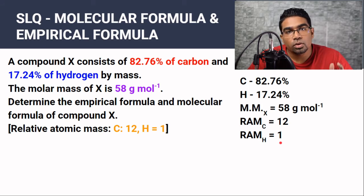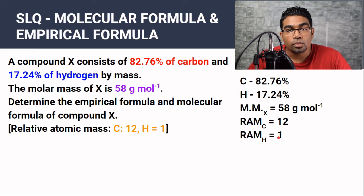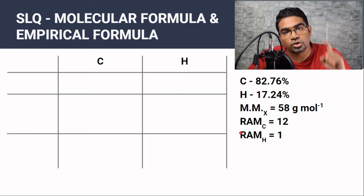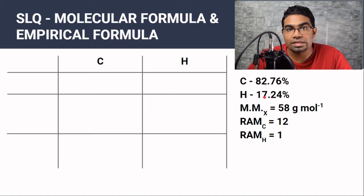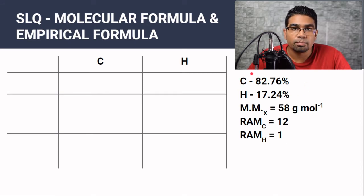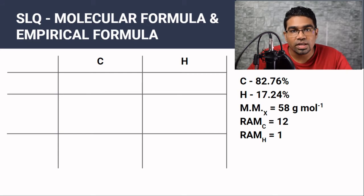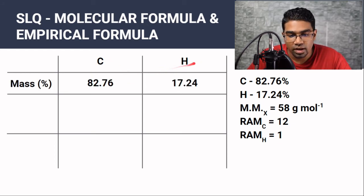When looking for empirical formula, the goal is to find the simplest ratio of the number of particles — we can stop at moles with the simplest mole ratio in mind. We aren't given mass directly, but percentage by mass can be treated as mass since we're working with ratios. So we take the mass of carbon as 82.76 and hydrogen as 17.24.